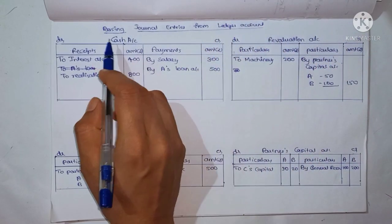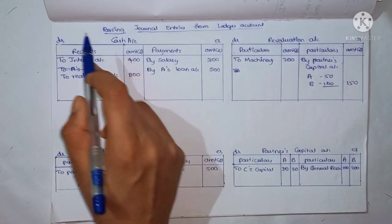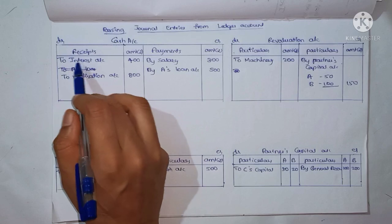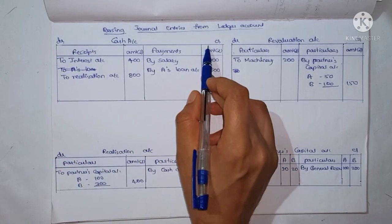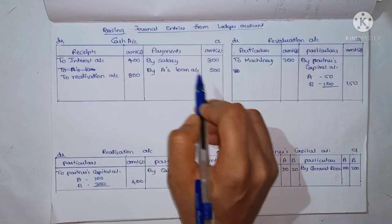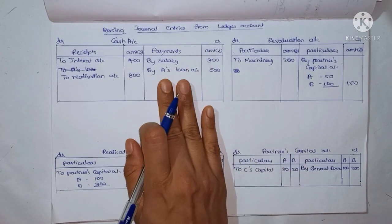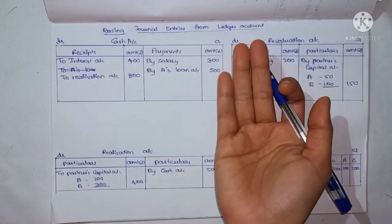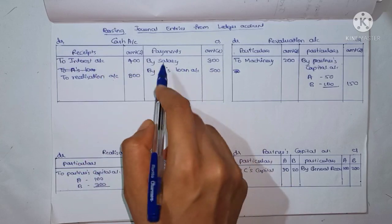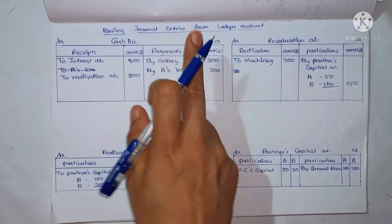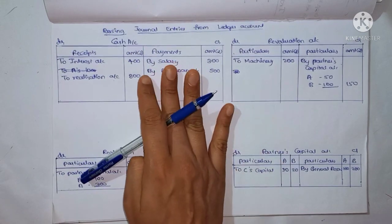In the cash account, we have the debit side with 'To Interest Account' and 'To Realization Account.' We have the credit side with 'By Salary' and 'By Ace Loan Account.' So we have 4 journal entries — 2 from the debit side and 2 from the credit side.